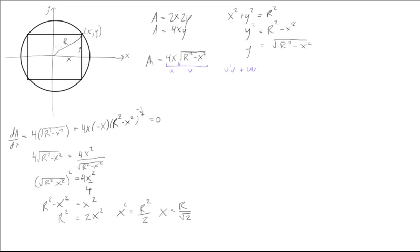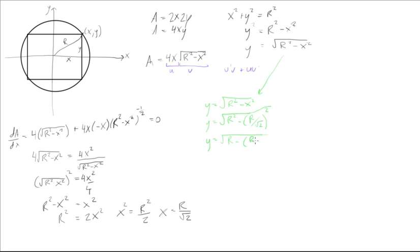We're trying to find the area of the square, so now we have the x component. We want to find y by substituting x back into our expression. We know y equals the square root of r squared minus x squared, so substituting x squared equals r squared over 2 gives y equals the square root of r squared minus r squared over 2, which equals the square root of r squared over 2.